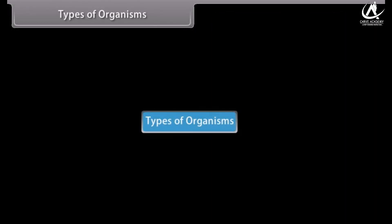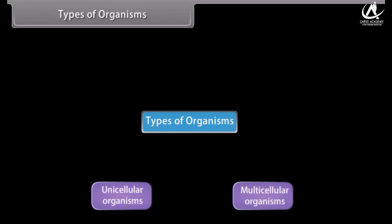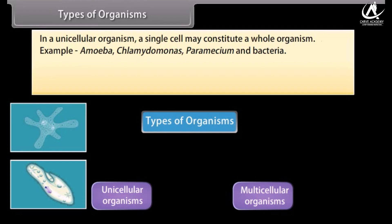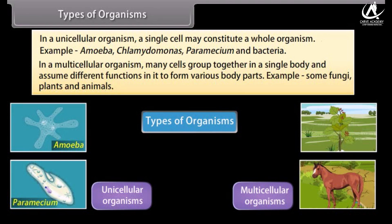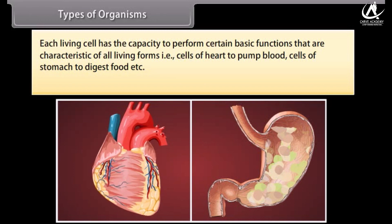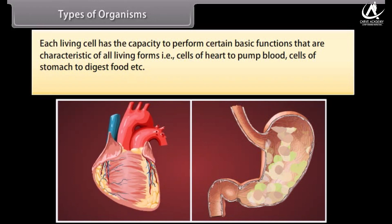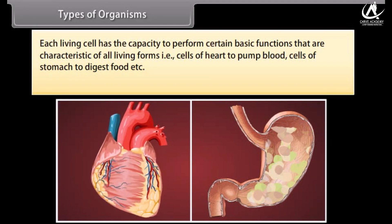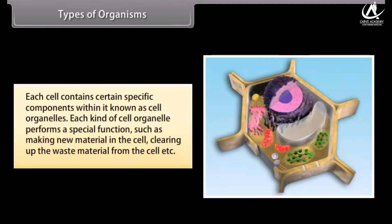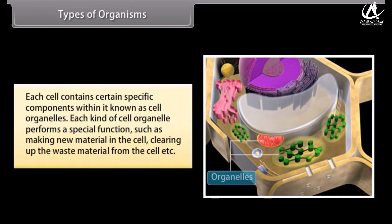Types of organisms: In unicellular organisms, a single cell may constitute a whole organism — for example, amoeba, chlamydomonas, paramecium, and bacteria. In multicellular organisms, many cells group together in a single body and assume different functions to form various body parts — for example, some fungi, plants, and animals. Each living cell has the capacity to perform certain basic functions characteristic of all living forms, such as cells of the heart pumping blood and cells of the stomach digesting food.